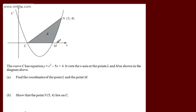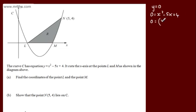At these points, y will be equal to 0. So if we write y equals 0, we can say 0 equals x squared minus 5x plus 4. That will factor to give x minus 1 and x minus 4, so x equals 1 or x equals 4. That's where the curve is crossing the x-axis.